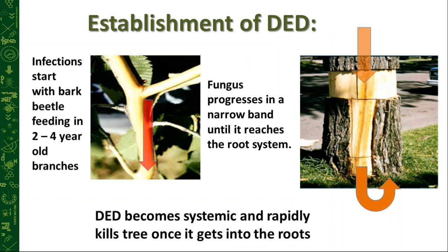The disease is established in the tree via bark beetles — there's a native and a European species. They feed in two-to-four-year-old branch crotches, carrying fungal spores on their bodies that transfer into the xylem of the elm. The spore germinates and progresses in a narrow band down to the root system, where it goes systemic and rapidly kills the tree.